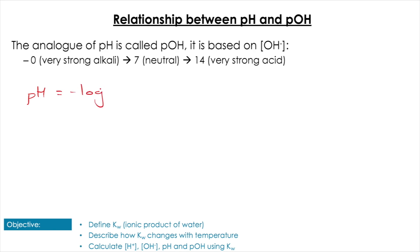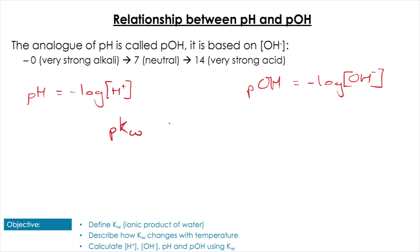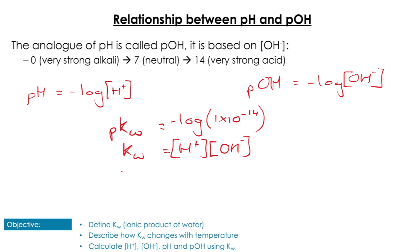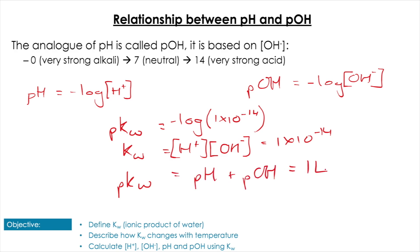Now let's introduce pOH. Just like pH = −log[H⁺], pOH = −log[OH⁻]. The pOH scale runs from 0 to 14, inverse to pH. Taking pKw = −log(1 × 10⁻¹⁴), and since Kw = [H⁺][OH⁻], taking the log of the whole equation gives us: pKw = pH + pOH = 14. This is a really handy shortcut.